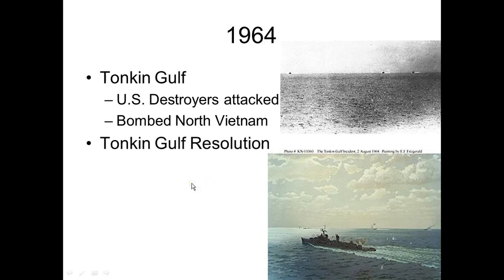Congress then passed the Gulf of Tonkin Resolution, which gave the president authority to use force to resist aggression. LBJ wanted the appearance of a war without a declaration of war. A declaration of war was avoided because that could lead China and the Soviets to declare war on us — essentially World War Three — and we didn't want that.